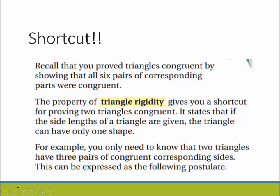Remember we had to prove that all six parts of a triangle were congruent, the three angles and the three sides. Totally not practical. So we have something called the property of triangle rigidity, which gives you a shortcut for proving two triangles are congruent.